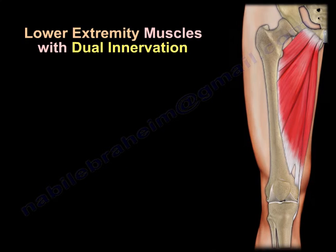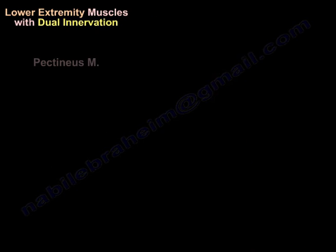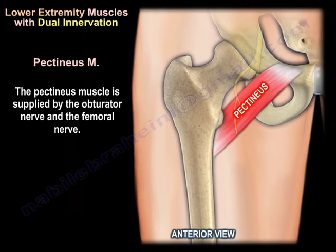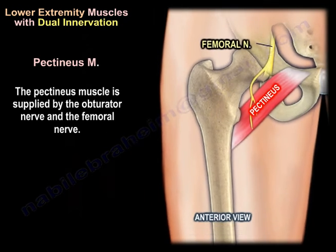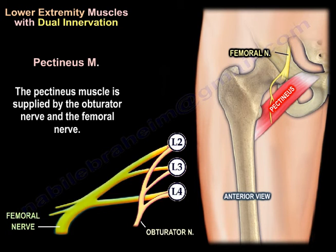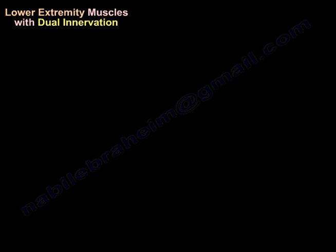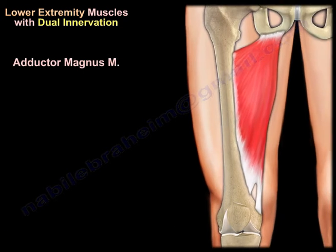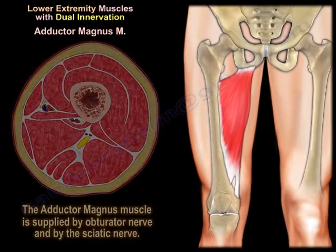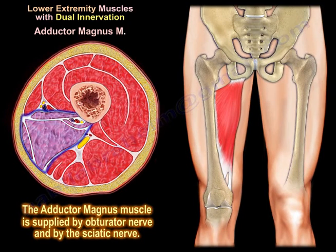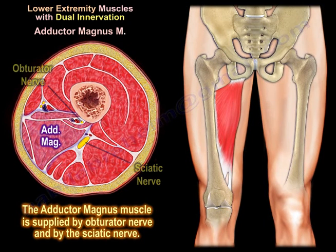Moving to lower extremity muscles with dual innervation: the pectineus is supplied by the obturator nerve and the femoral nerve, and the adductor magnus is supplied by the obturator nerve and the sciatic nerve.